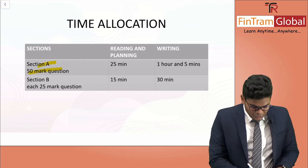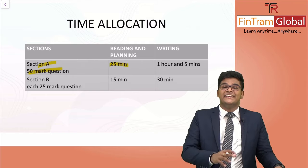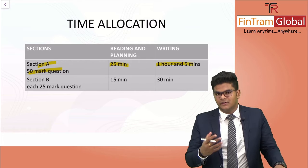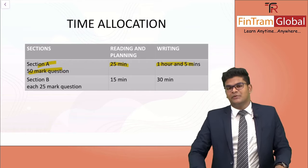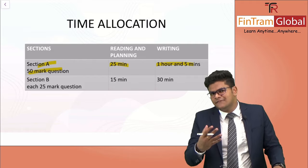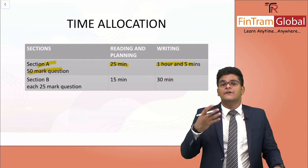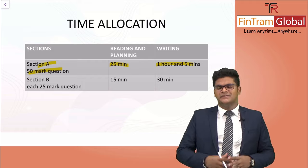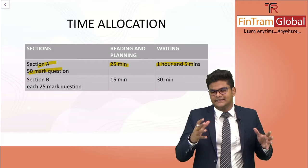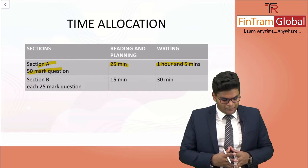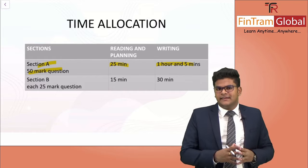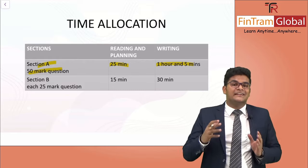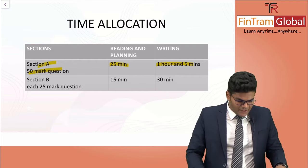The new time allocation strategy for Section A — the 50-mark question — is 25 minutes for reading and planning, and then one hour and five minutes to write down the answer. Previously we used to take about 20 minutes to read and plan, so we're taking an additional five minutes to think out a structure so that we can score those professional marks as well. Try not to take too much time there, and you can only become compatible with this time strategy if you keep practicing a lot of questions.